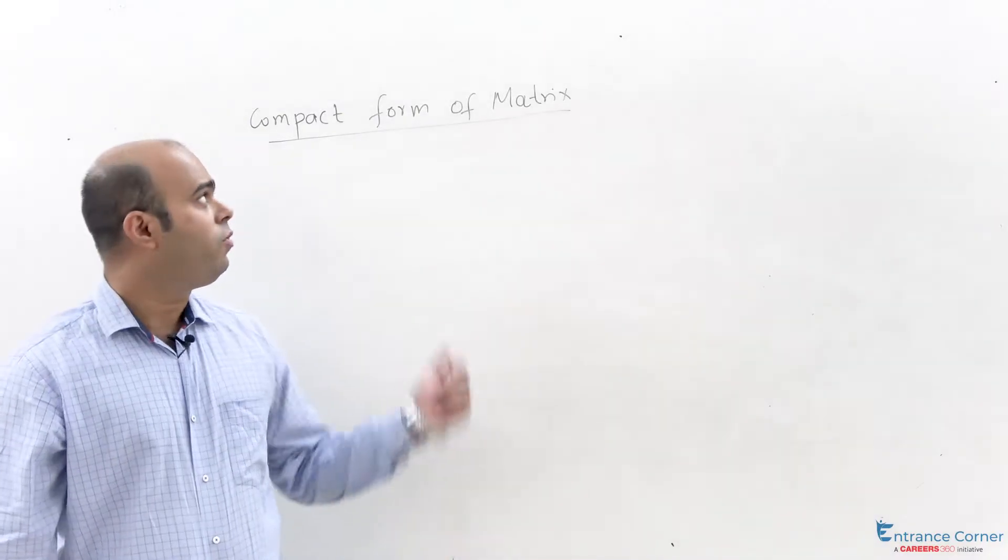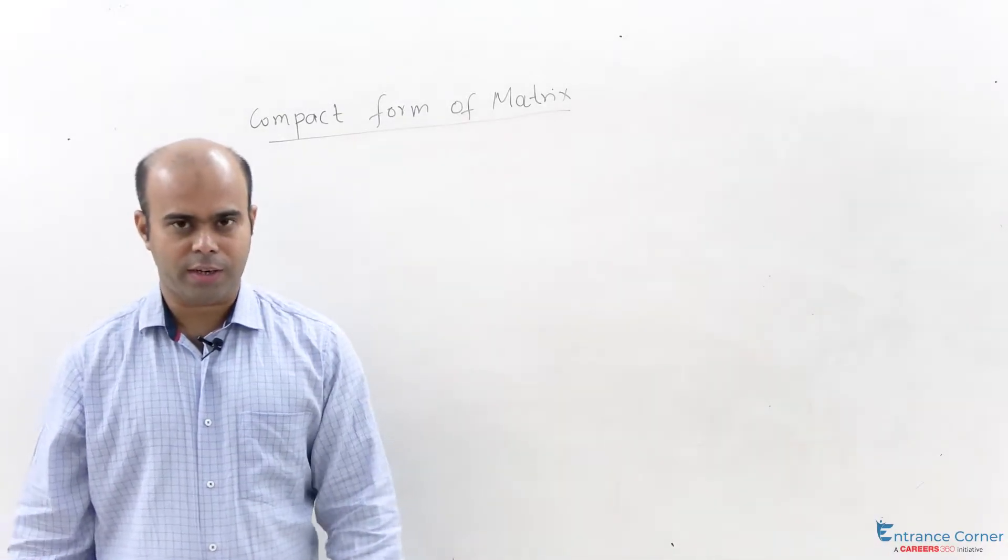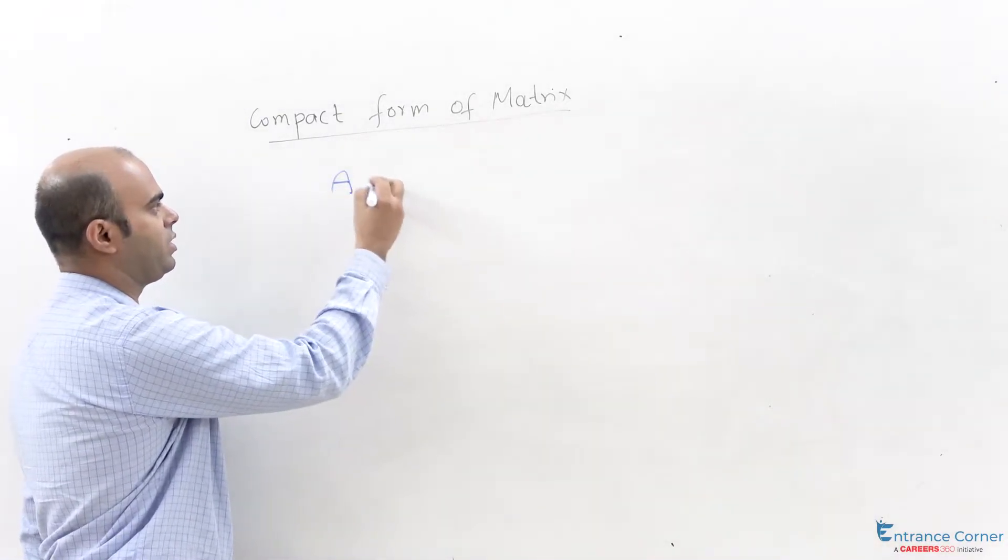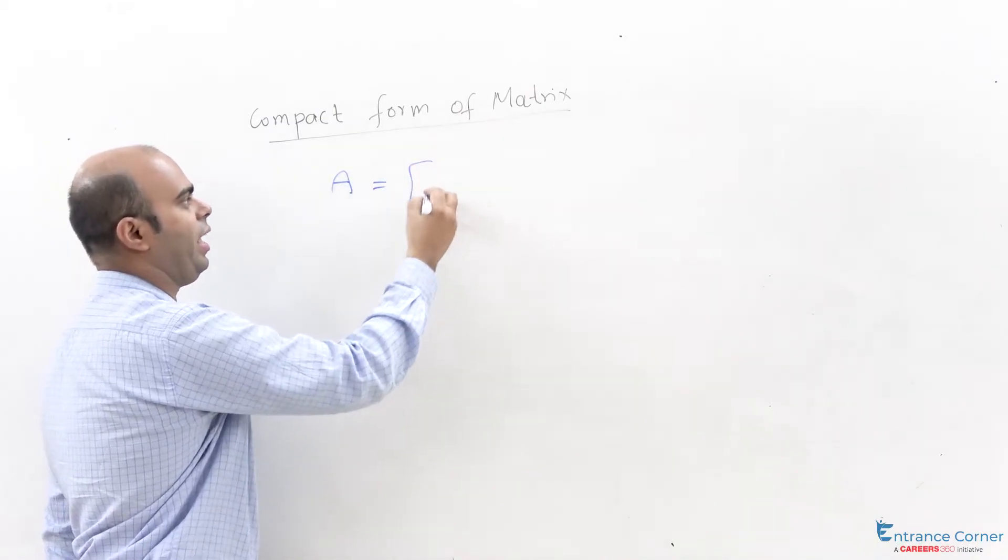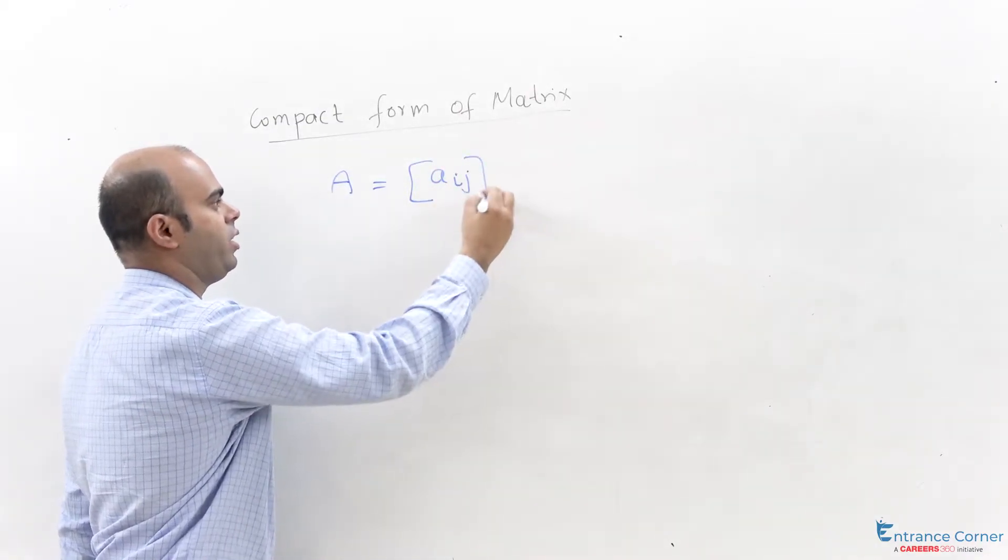Good morning students. Right now we are going to study compact form of matrix. Compact form of matrix is a matrix when represented like this aij m cross n.